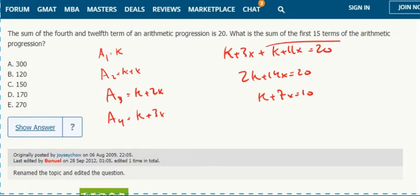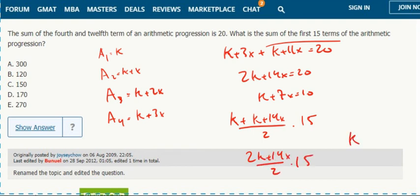For the sum of the first 15 terms, because it's an evenly spaced set, we can use the least plus the greatest. The 15th term is k plus 14x over 2, times the number of terms which is 15. That's 2k plus 14x over 2, so k plus 7x times 15. We know k plus 7x equals 10, so that's 10 times 15, which equals 150.